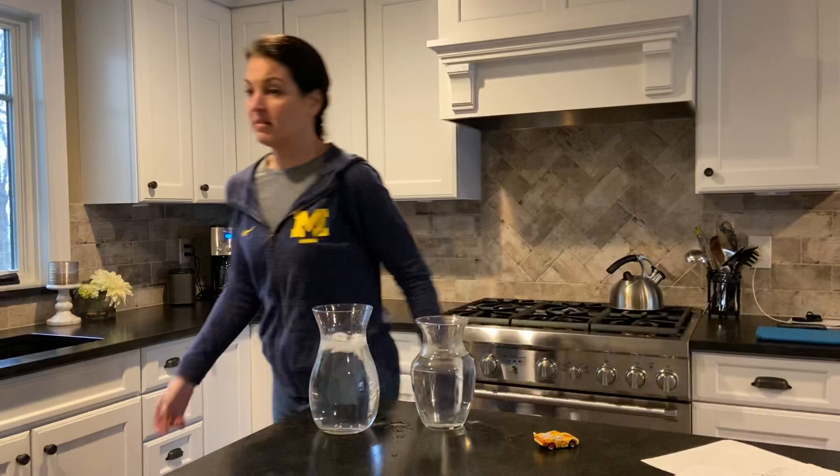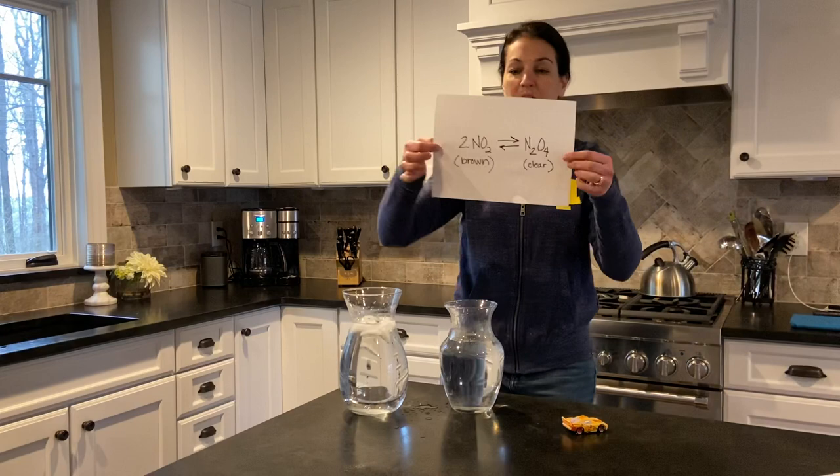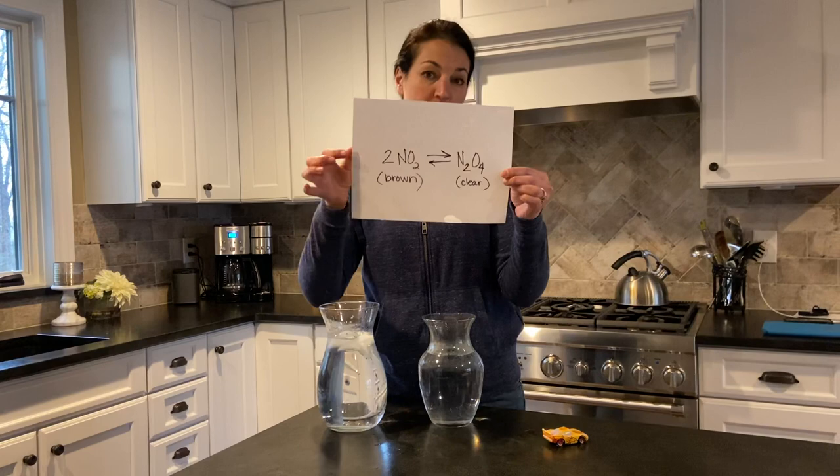The next example is a little more chemistry-related where you can actually see what the substance is. We have two different substances: NO₂, which is a brown color, and N₂O₄, which is clear. I'm going to go get two tubes that are in the freezer right now and show you.